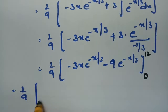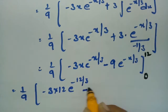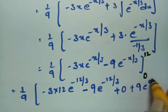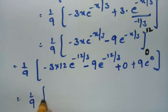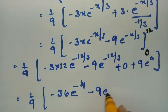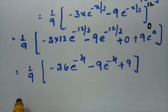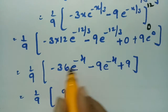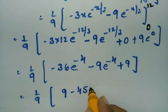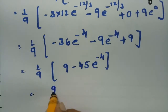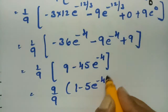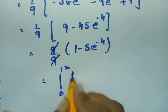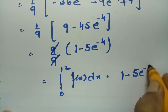Substituting the upper limit x = 12: (1/9)·[−3(12)e^(-12/3) − 9e^(-12/3)] = (1/9)·[−36e^(-4) − 9e^(-4)]. For the lower limit x = 0, the expression equals −9. So the result is (1/9)·[−36e^(-4) − 9e^(-4) + 9] = (1/9)·[9 − 45e^(-4)] = 1 − 5e^(-4). Therefore ∫₀¹² f(x) dx = 1 − 5e^(-4).